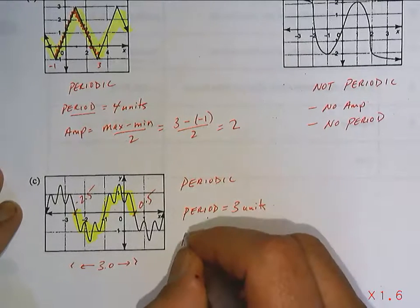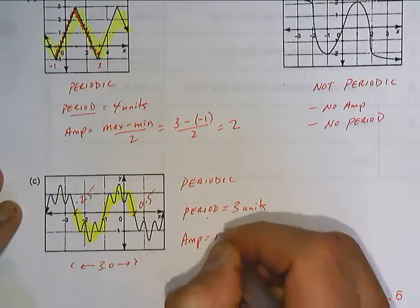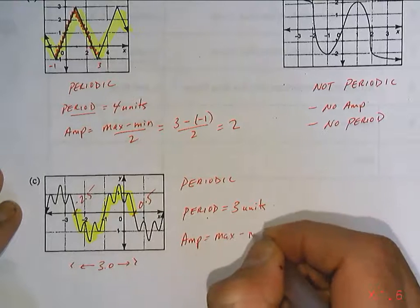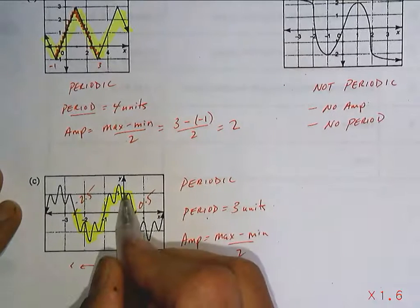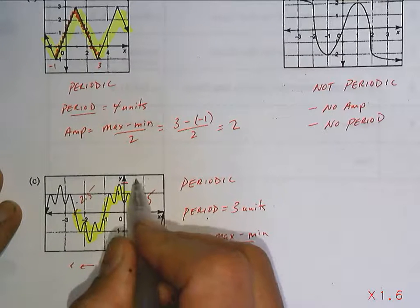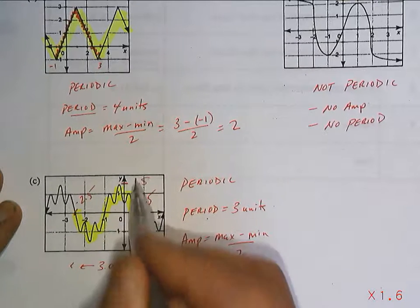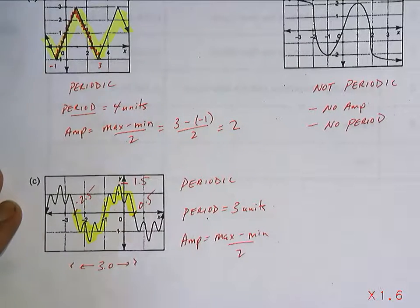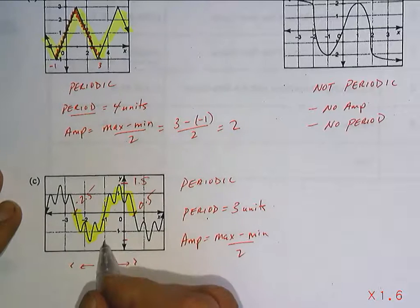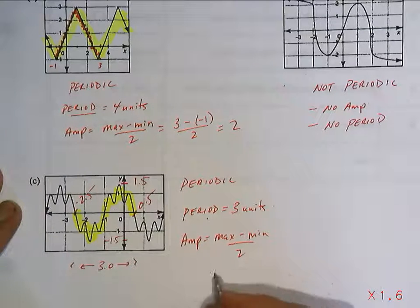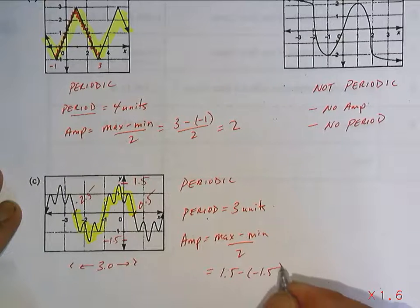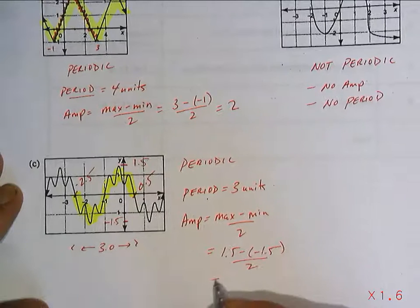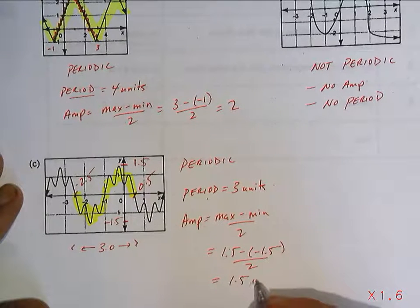Its amplitude. You take its max, you subtract its min, and you divide by 2. Its maximum, we would consider that about 1.5. And down here, I would consider this about negative 1.5. So it's going to be 1.5 subtract negative 1.5 over 2, which is 3 over 2. So it's 1.5 units.